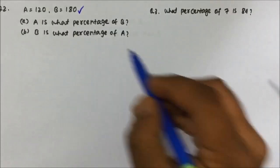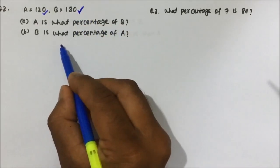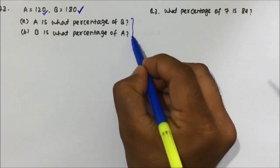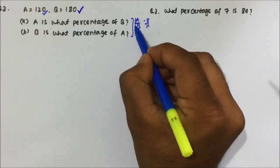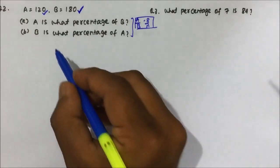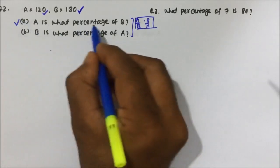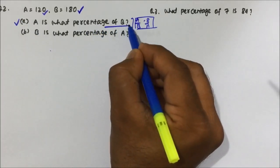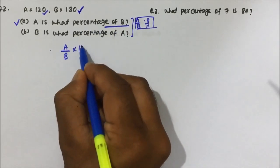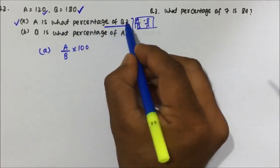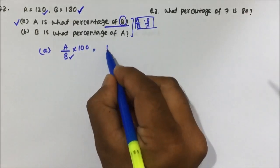Question 2: A is 120 and B is 180. First, A is what percentage of B? Students often get confused about which value goes on top or bottom. The key rule is: whoever you are comparing with goes on the bottom. A is being compared with B, so B goes down. The formula is: (A / B) × 100.